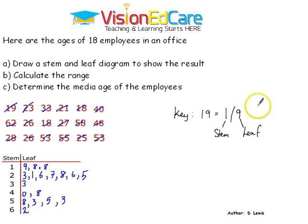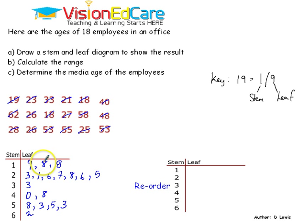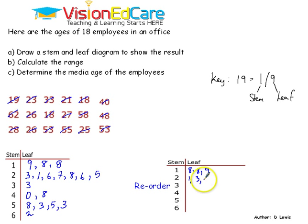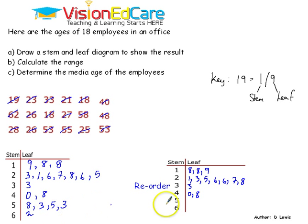We need to now reorder our stem and leaf diagram. We draw another column with stem and leaf and reorder. In the first row the smallest number is 8, so we have 8, 8, and 9. In the second row the smallest is 1, then 3, 5, 6, 6, 7, 8. Then for the thirties row: 0, 8. For the forties: 0, 8. For the fifties: 3, 5, 8. And then we have 2 for the sixties row.